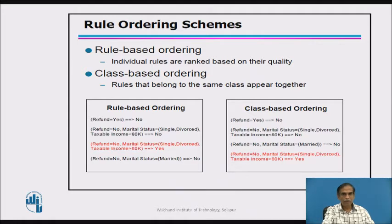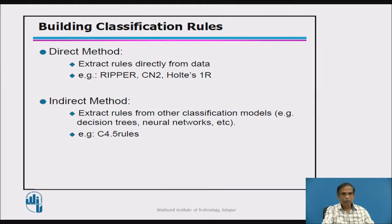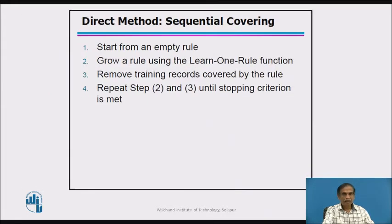There may be rule-based ordering or class-based ordering. Direct methods are used in tools like RIPPER, CN2, HALTIS, and 1R, while indirect methods are used in C4.5 rules, where rules are extracted from other classification models. Sequential covering starts from an empty rule and grows it until the largest rule representing the data set is found, with a stopping criterion developed.